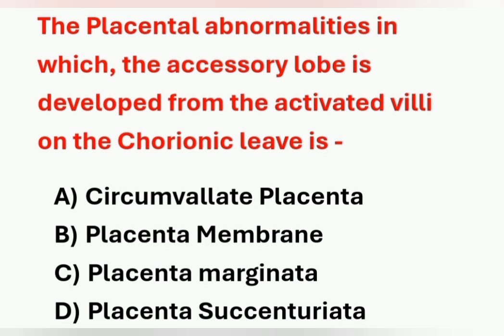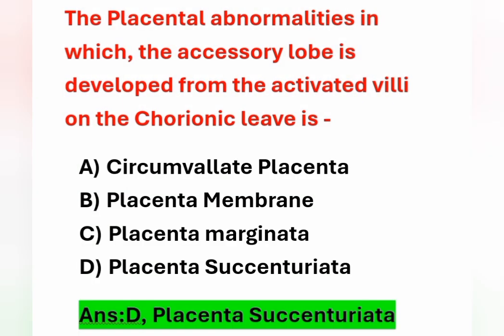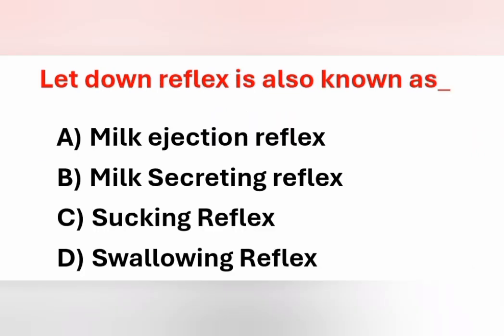Next question: the placental abnormality in which an accessory lobe is developed from the activated villi on the chorionic laeve is called? Options: A) Circumvallate placenta, B) Placenta membranacea, C) Placenta marginata, D) Placenta succenturiata. The correct answer is placenta succenturiata — small accessory lobes or extra cotyledons are developed from the margin of the placenta.